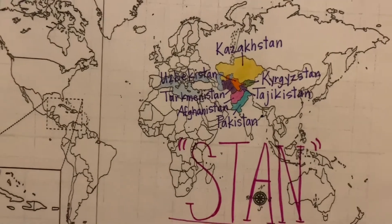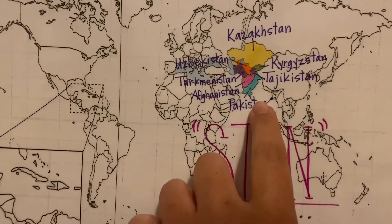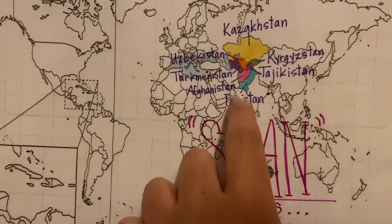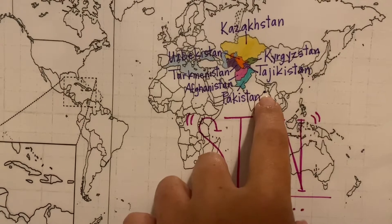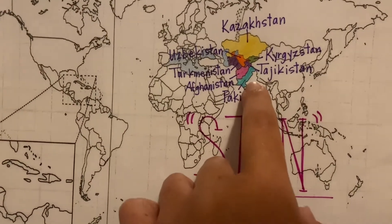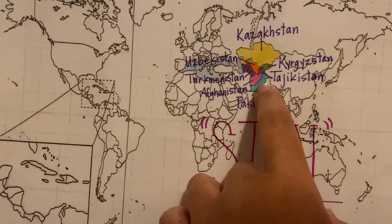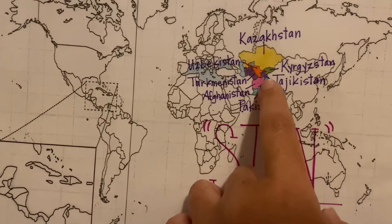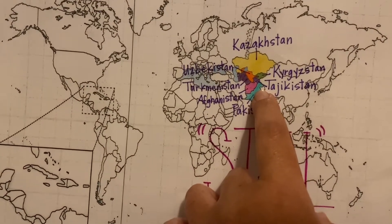We're going to locate India. Remember, the Arabian Sea is over here. India and Kolkata — we're going to locate India, and we're going to go just to the north of India. And this is where we're going to start — we're going to start in Pakistan.